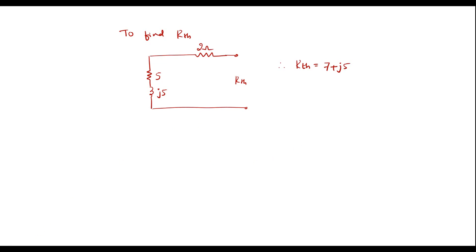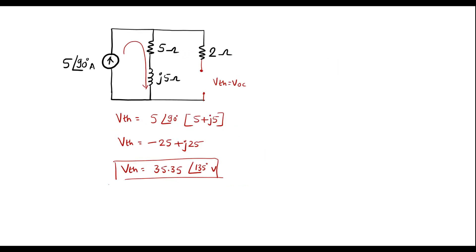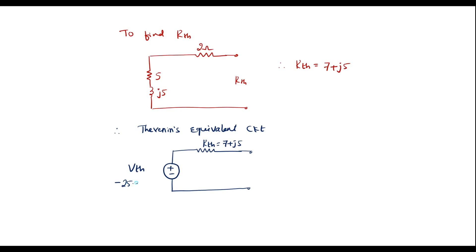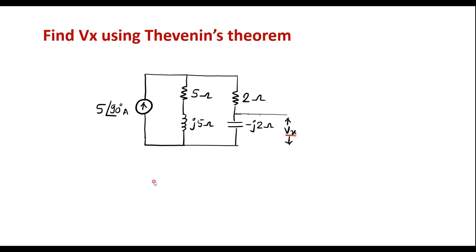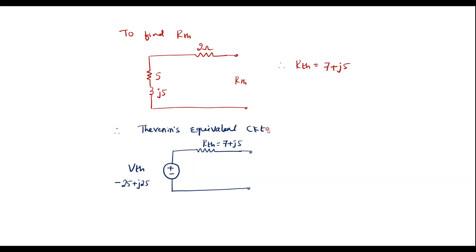Now let me draw the Thevenin's equivalent circuit. The Thevenin equivalent circuit has Vth in series with Rth. Rth is equal to 7 + J5. The Vth value already calculated is -25 + J25. Between the two terminals, we are supposed to connect -J2 ohm, so connect -J2 ohm here.